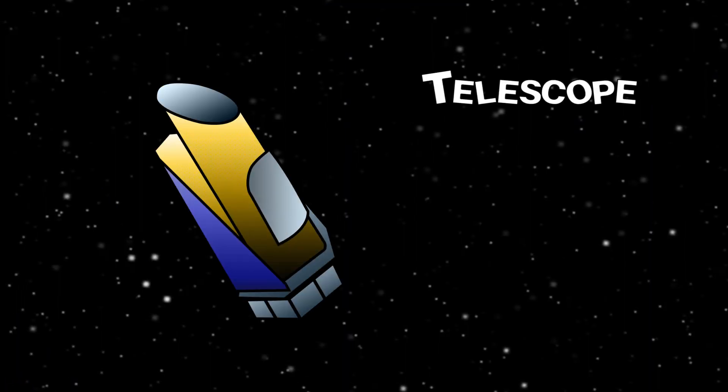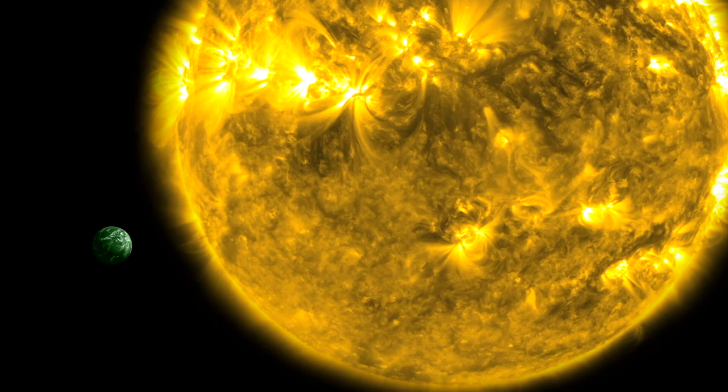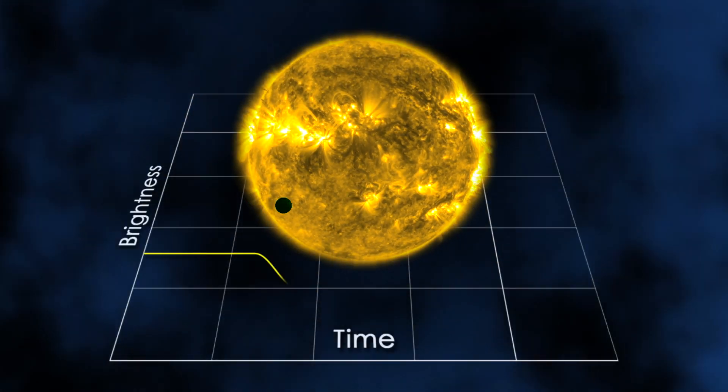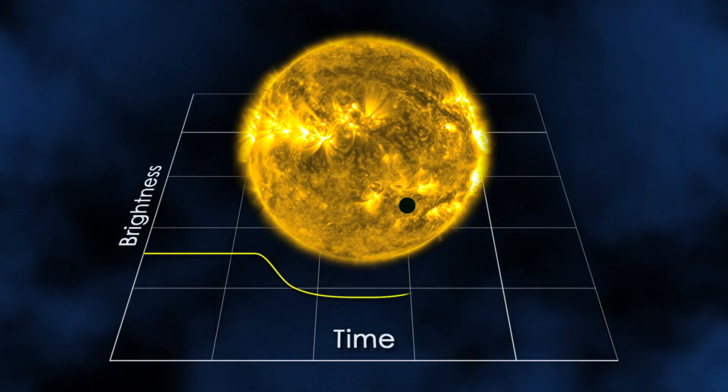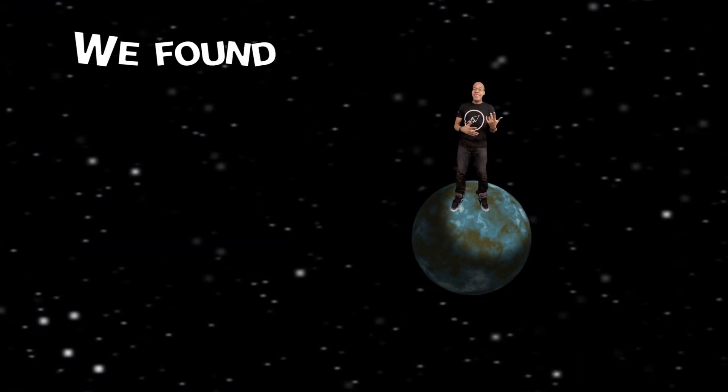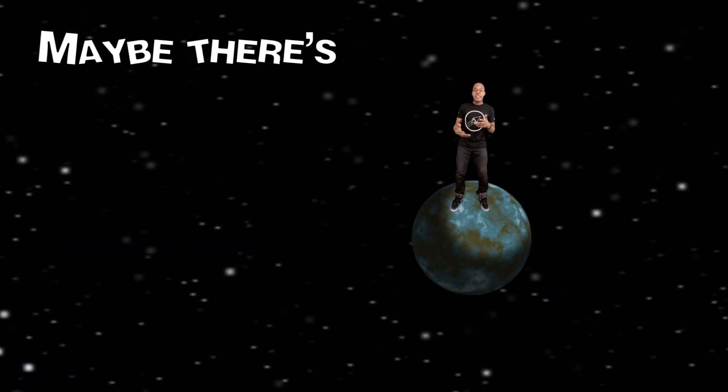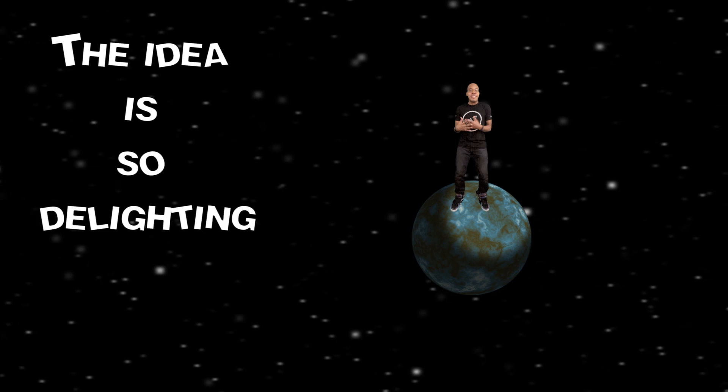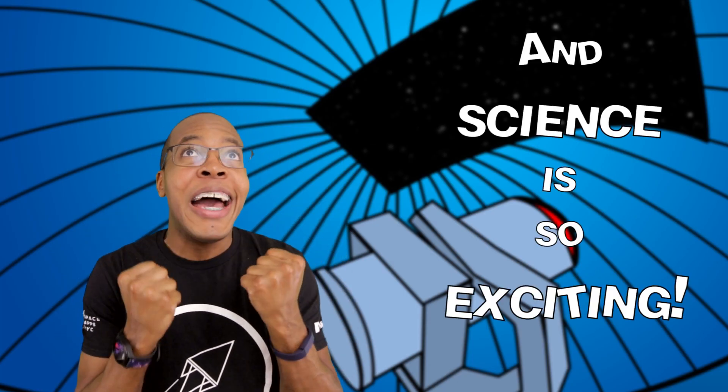Maybe there's life on another planet. Telescope checking that transit dip, looking at the light these stars emit. Seeing that they wink a little bit means something must be in their orbit. We found an exoplanet—maybe there's life on it. The idea is so delighting, and science is so exciting.